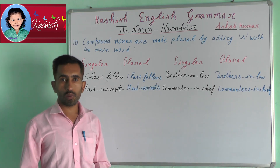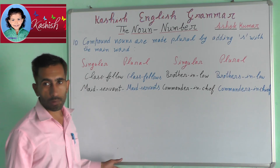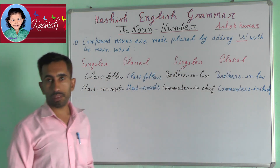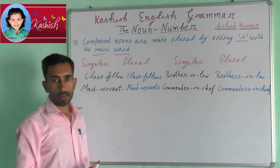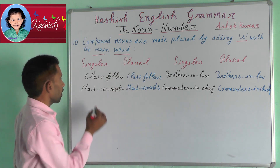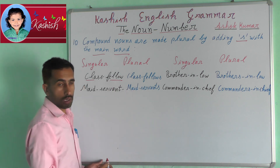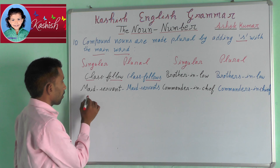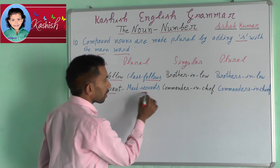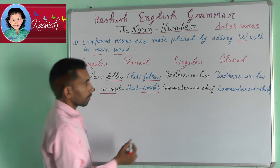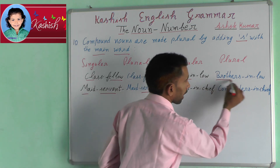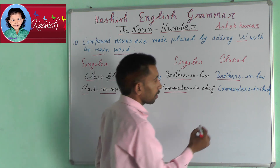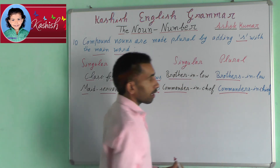Tenth rule: compound nouns are made plural by adding S with the main word. For example: fellow → fellows, maid-servant → maid-servants, brother-in-law → brothers-in-law, commander-in-chief → commanders-in-chief.